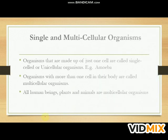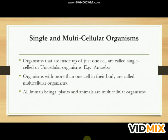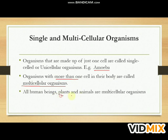Organisms that are made up of just one cell are called single-celled or unicellular organisms — for example, amoeba. Organisms with more than one cell in their body are called multicellular organisms. All human beings, plants, and animals are multicellular organisms.